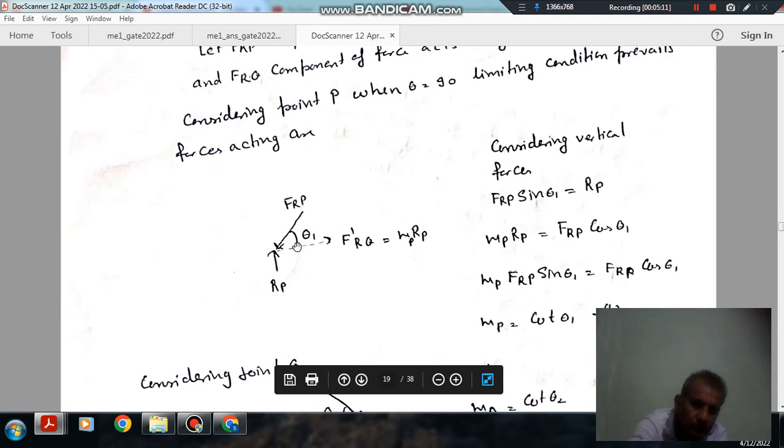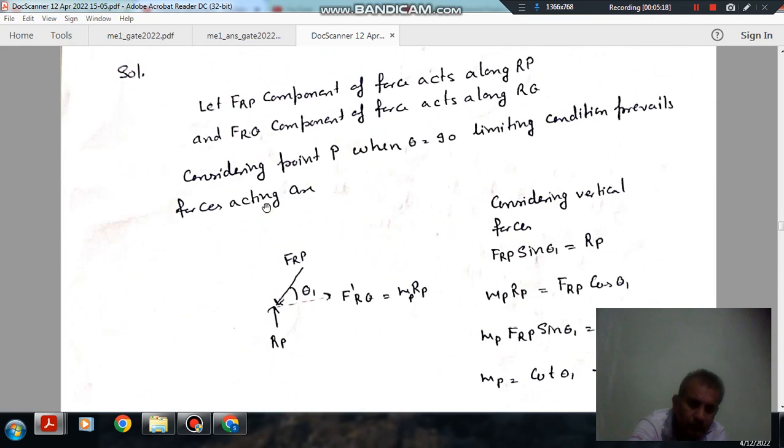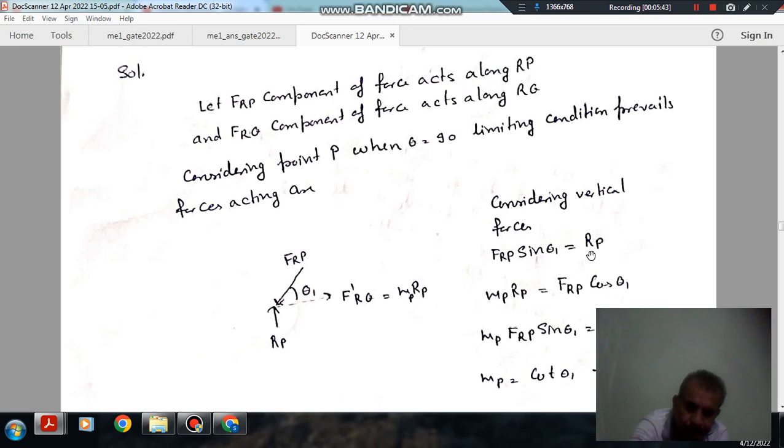Considering this point, the force of friction at P. Now resolving vertically, F_RP will be F_RP sin(theta1) will be equal to R_P. And resolving horizontally, it will be mu_P times R_P.